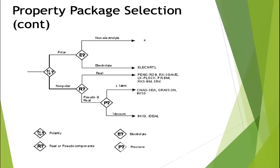One simple method for selecting a property package is to first determine whether your component is polar or non-polar. If it is polar, you determine whether it is an electrolyte or non-electrolyte. Polar components are generally used for chemical industries.